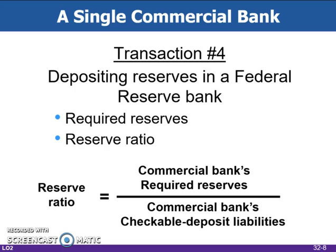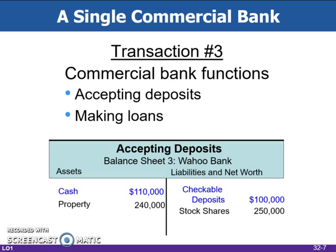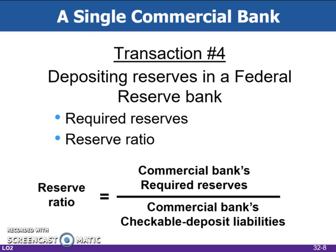Banks are not required to keep 100% of their deposits on hand at all times, because the probability that all customers will ask for their money back at the same time is small. If all customers did return to demand their money at the same time, this would be referred to as a run on the bank. To prevent bank runs, the Federal Reserve sets required reserve ratios on all checkable deposits — essentially a percentage the Federal Reserve requires banks to keep on hand. For example, with $100,000 in checkable deposits and a 10% requirement, the bank deposits $10,000 into their Federal Reserve account, and the other $90,000 they are free to loan out to businesses or individuals.